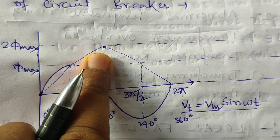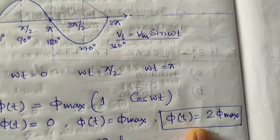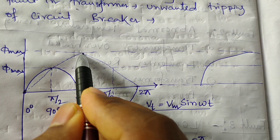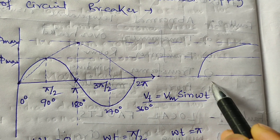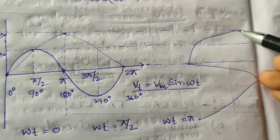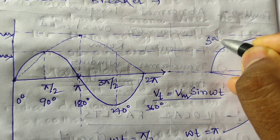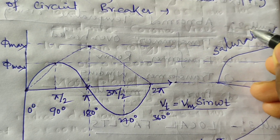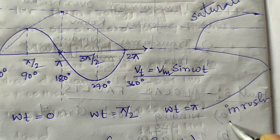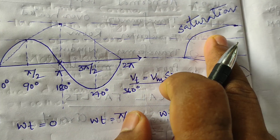The 2φmax represents two times the maximum flux. Drawing the curve, we show the saturation value — when the core is saturated, the current is maximum at the saturation point. This is the inrush current curve, and this is the saturation curve. From the inrush current curve we obtain the value of inrush current, and from the saturation curve we obtain the saturation value.